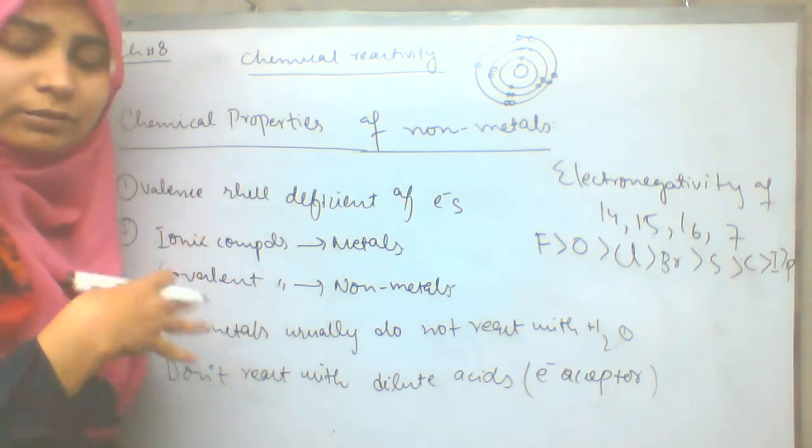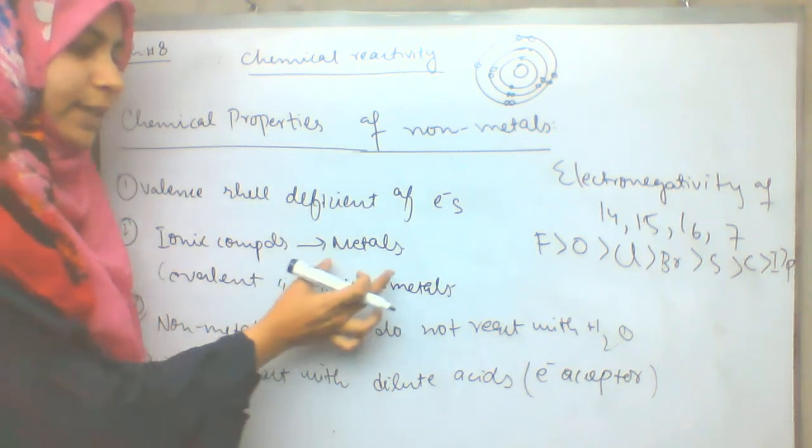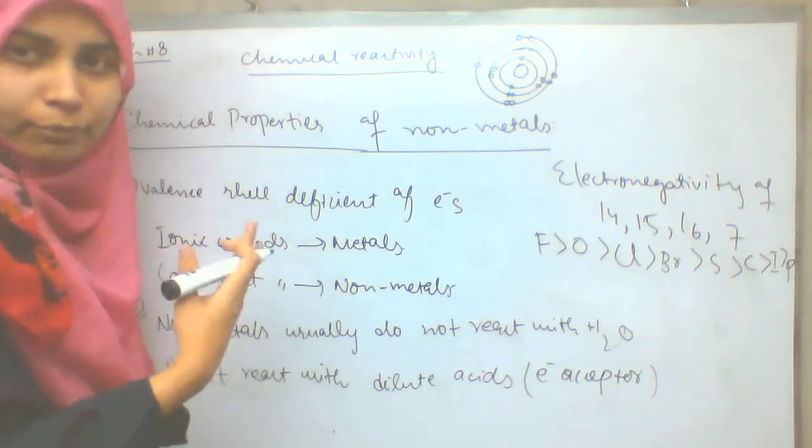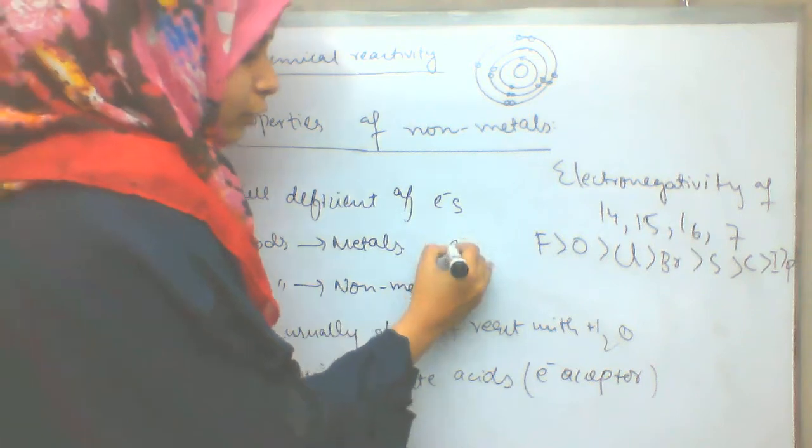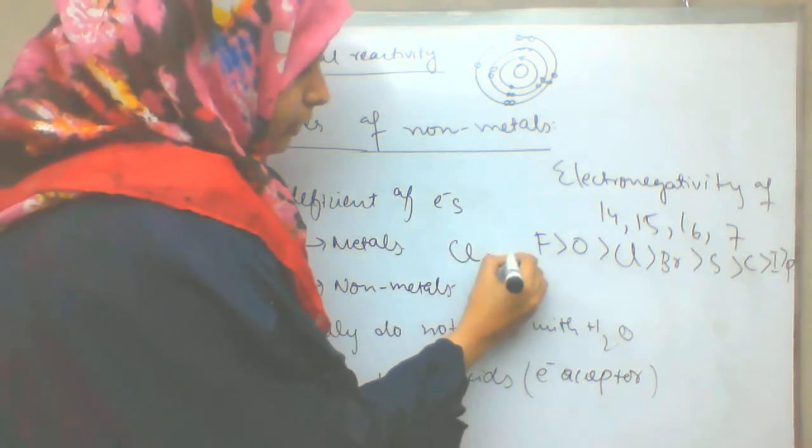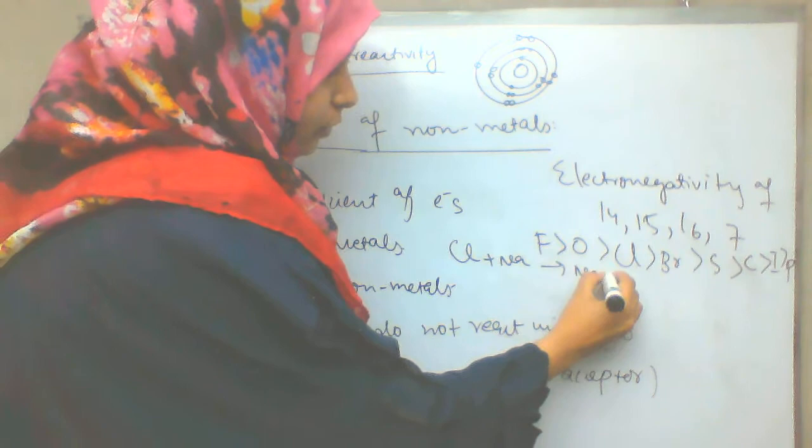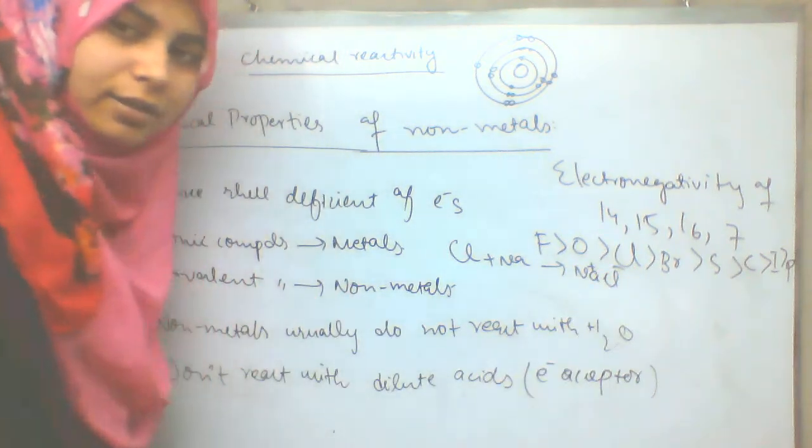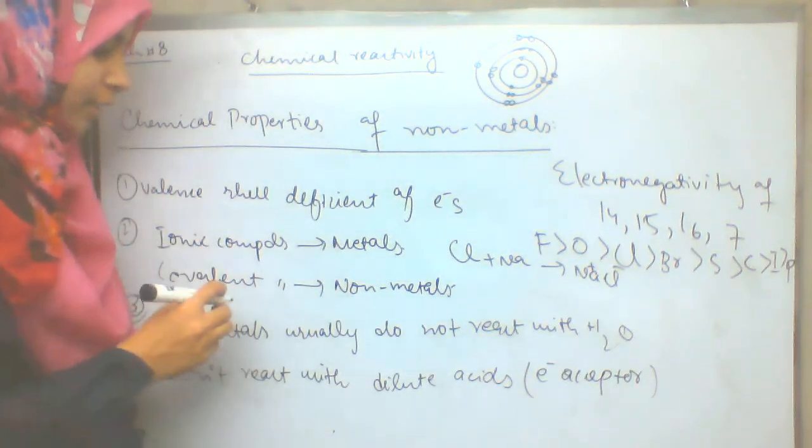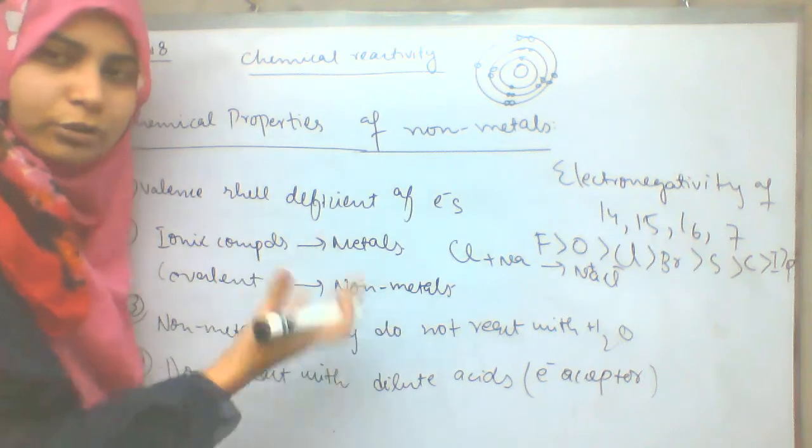If there is a reaction of non-metals with metals, it will be an ionic compound. Like chlorine reaction with sodium, which is an ionic compound.